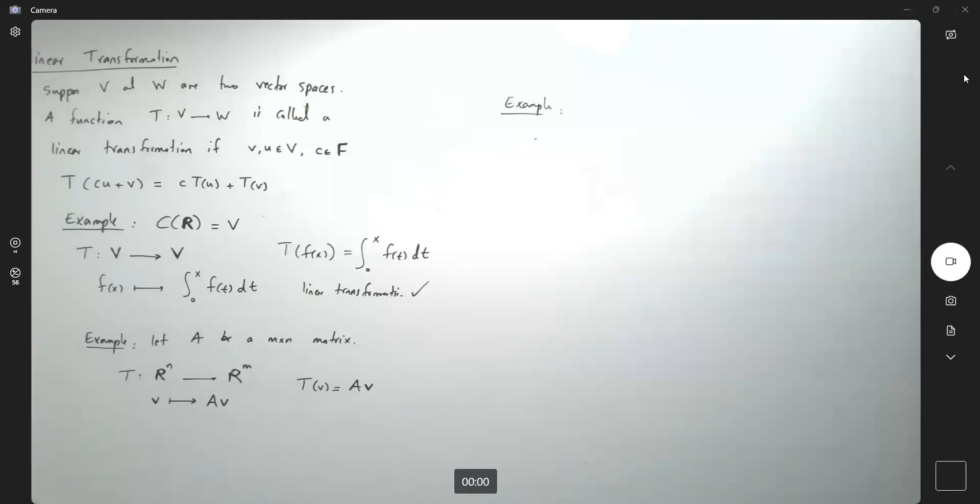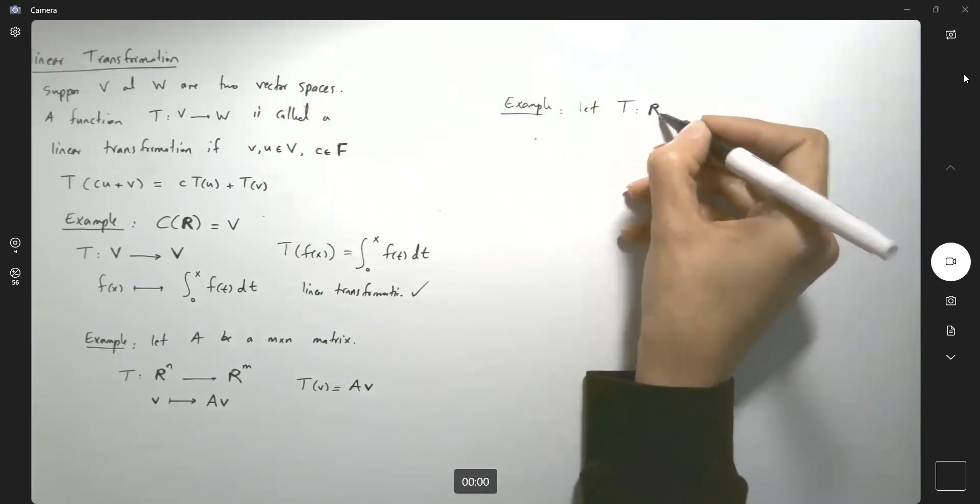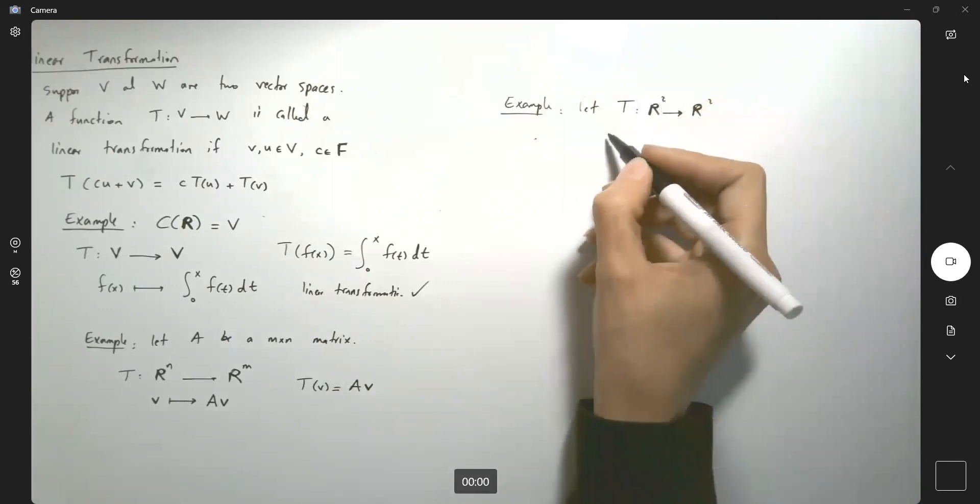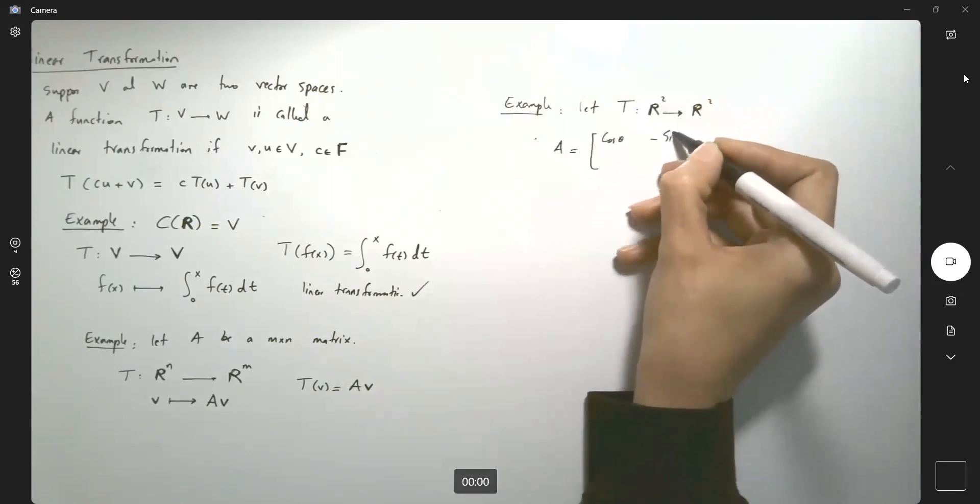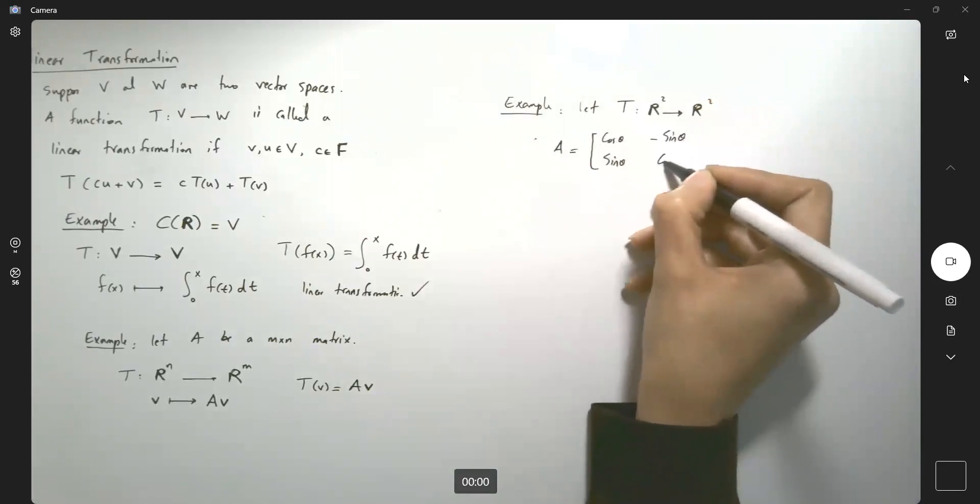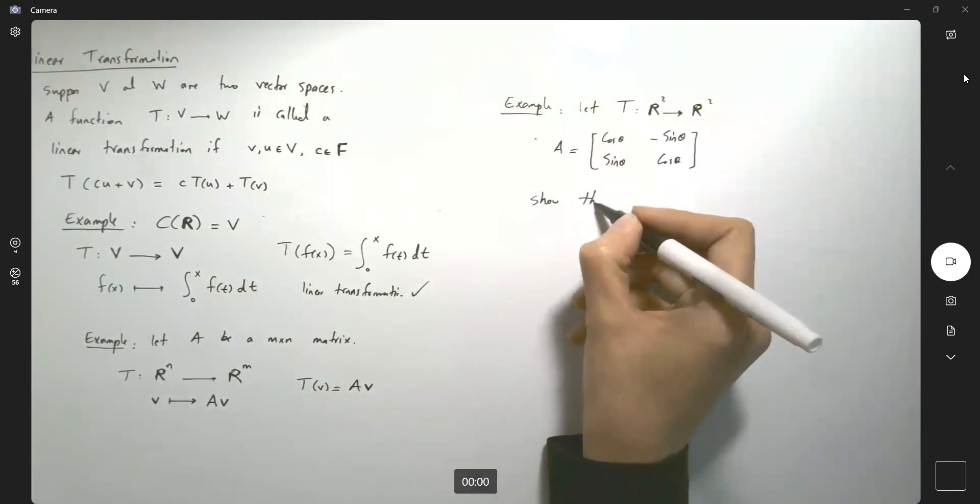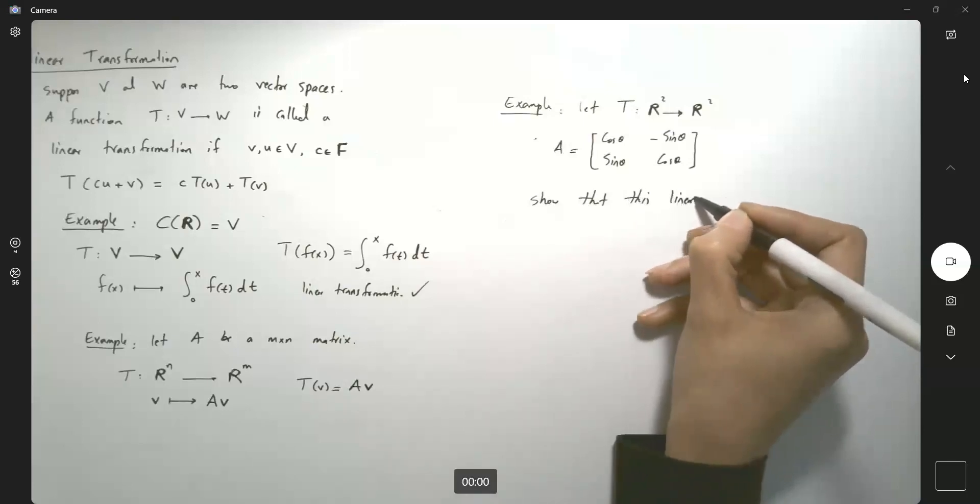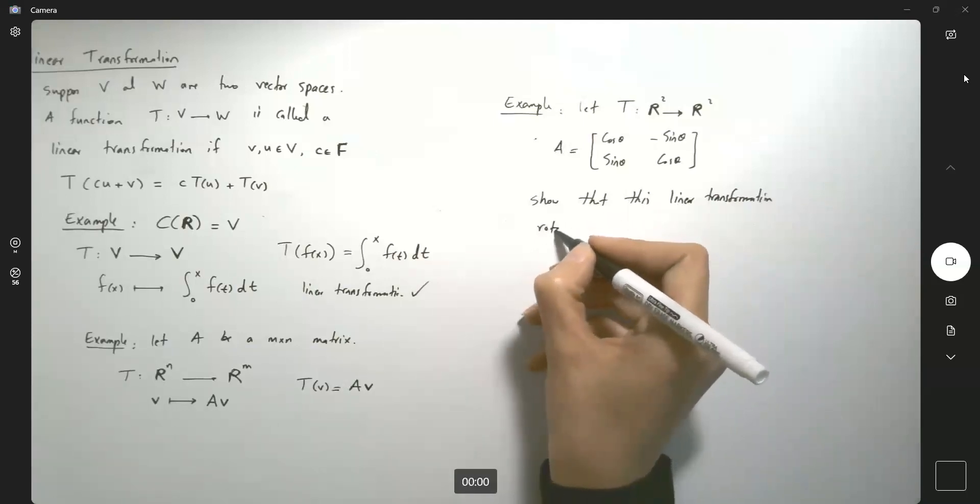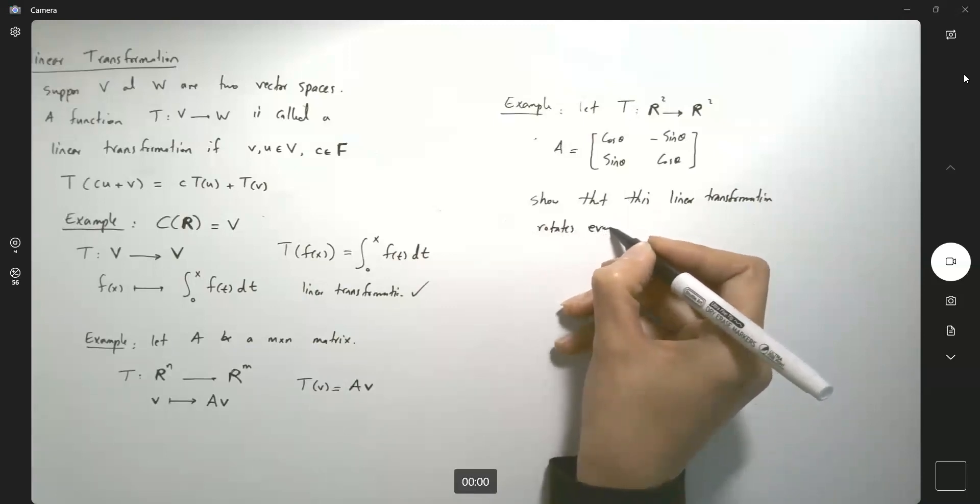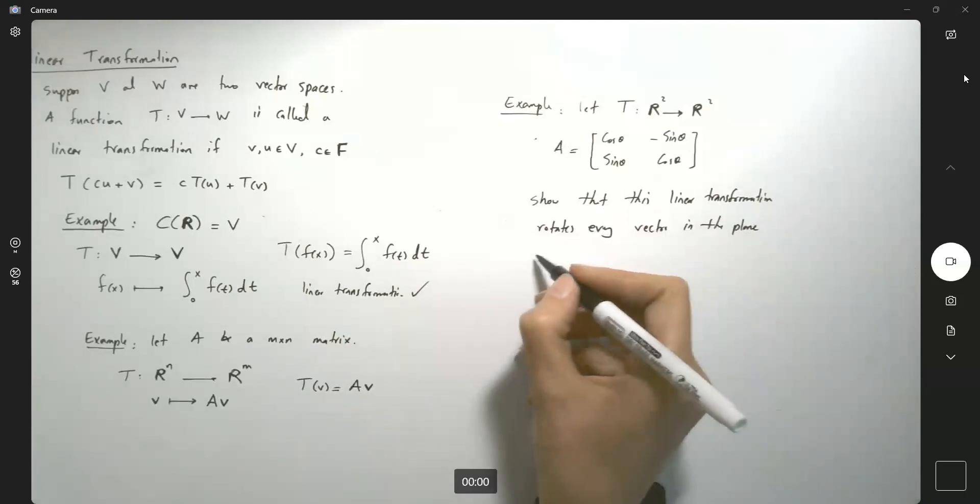Another example for you here. The question says, let T map the plane to the plane, and you're defining matrix A to be cosine theta, negative sine theta, sine theta, and cosine theta. The question says show that this linear transformation rotates every vector in the plane counterclockwise about the origin.